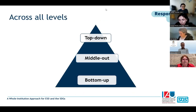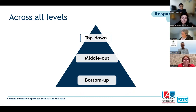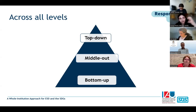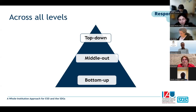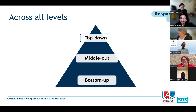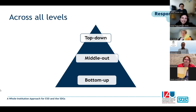Another way to ensure a whole institution approach is to embed sustainability and the SDGs across all levels of the institution. There are three levels: top-down changes through policies, strategies, and quality assurance for modules and courses; bottom-up through engagement with students and trade unions; and middle-out — the way educators engage with students and with senior leaders, linking top-down and bottom-up. To truly embed the SDGs and ESD, we need to look at all spheres of learning and all these levels.